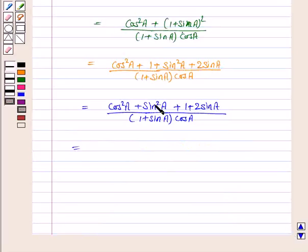Now we know that cos square A plus sin square A is 1. So it is 1 plus 1 plus 2 sin A upon 1 plus sin A into cos A.